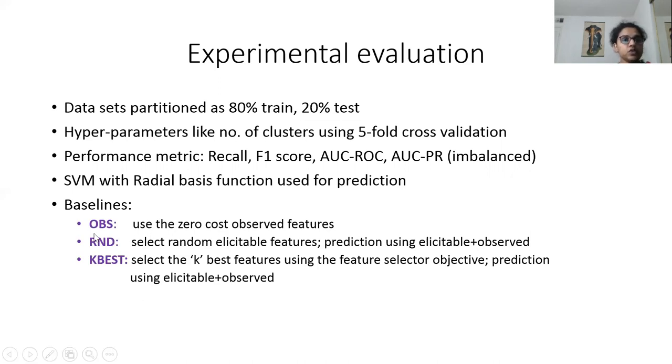These are the baselines we used for evaluation. OBS is the simple baseline where we build the model on just the zero-cost observed features. RNG selects random elicitable features for the entire data. K-BEST selects the k best features using the feature selector objective function without any underlying cluster consideration.